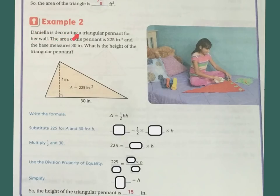So Daniela is decorating a triangular pennant for her wall. The area of the pennant is 225 square inches, and the base measures 30 inches. What is the height of the pennant? So this is kind of like yesterday where we had the area, and we had the base, but we didn't have the height. So my base is here. My whole area is here. So this times this divided by 2 is this. So we're going to substitute the 225 in for the A in my formula. So I'm going to put my 225 there. And I know the base is 30, so I'm going to substitute that. So now I have 225 equals half times 30 times h.